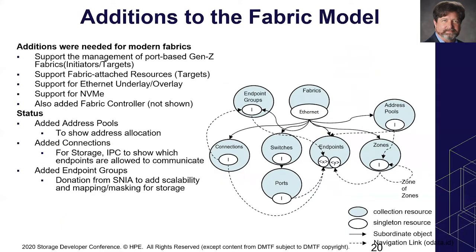Fabric model additions in 2020.3 include endpoint groups — a collection of endpoints with mapping and masking properties, also being extended for memory access. Rather than creating a new connection for every access addition, endpoint groups allow connections between groups of endpoints, which is much more scalable. Address pools were also added to represent address allocation — subnets, IP address ranges, Gen Z addressing — for endpoints or zones. Endpoint groups were donated from SNIA to address scalability and mapping and masking for storage.